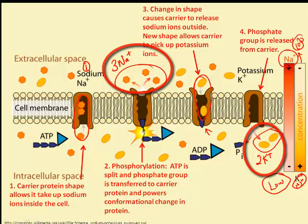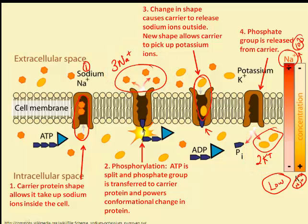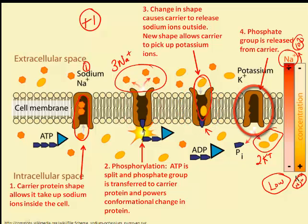You might ask why bother bringing the potassium back in, since that makes the outside a little bit less positive. In fact, the outside has only become more positive by a factor of one since two positive ions are returned back inside. The reason is that these carriers get used over and over again, and one carrier might actually transport many loads of sodium outside of the cell.